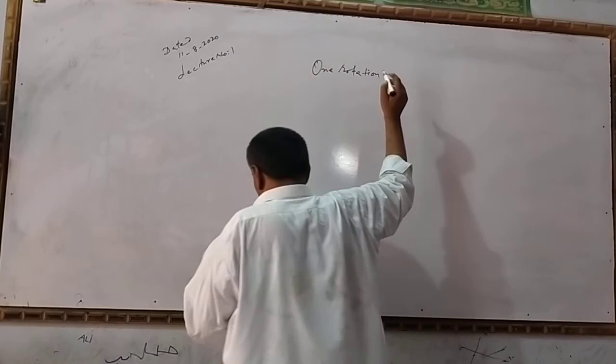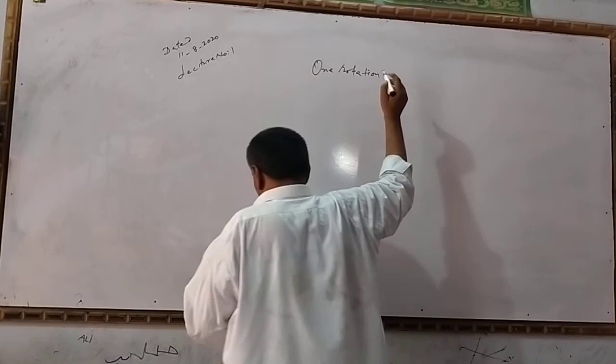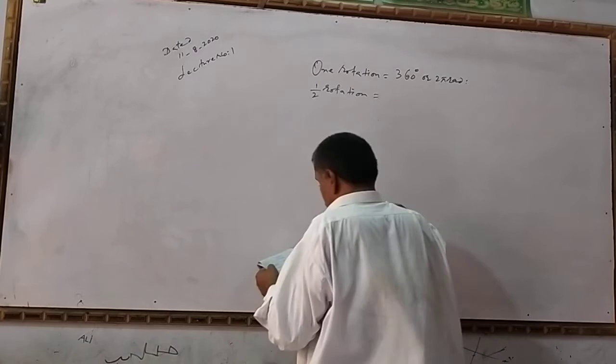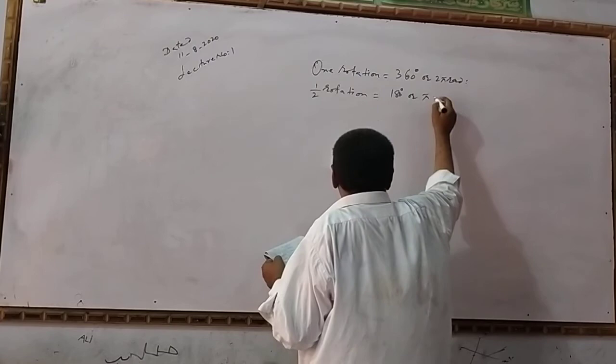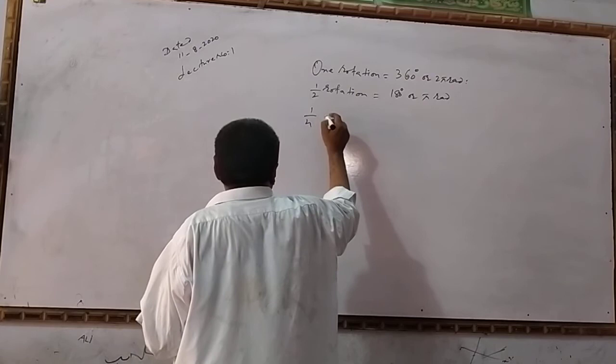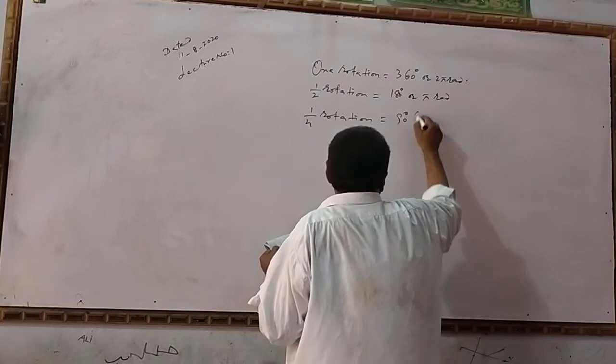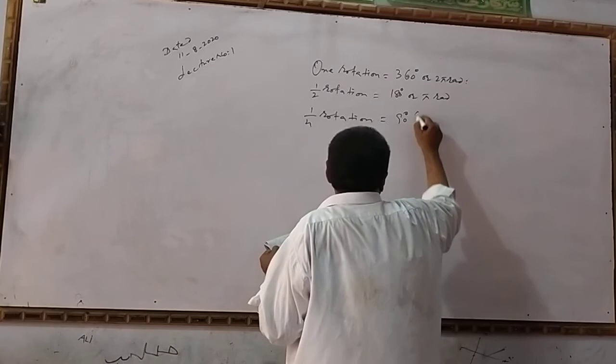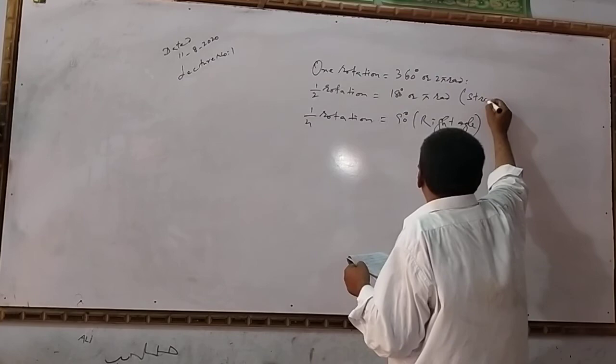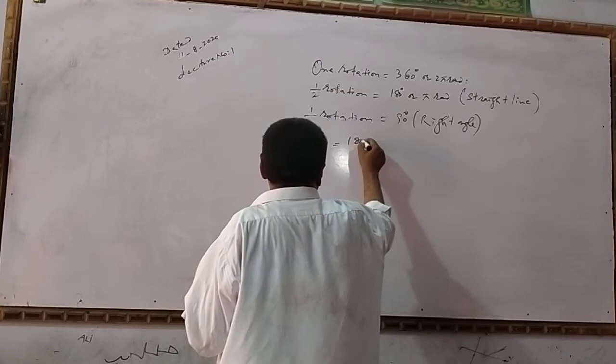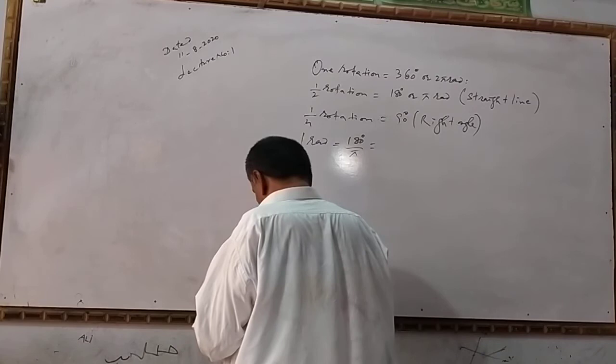One rotation equals 360 degrees or 2π radians. Half rotation equals 180 degrees or π radians. One-quarter rotation equals 90 degrees or π/2 radians.